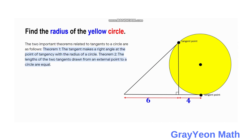Before we solve this problem, let us review some theorems about tangent relationships in a circle. The two important theorems related to tangents of a circle are as follows. Theorem 1: the tangent makes a 90-degree angle with the radius of the circle at the point of tangency.